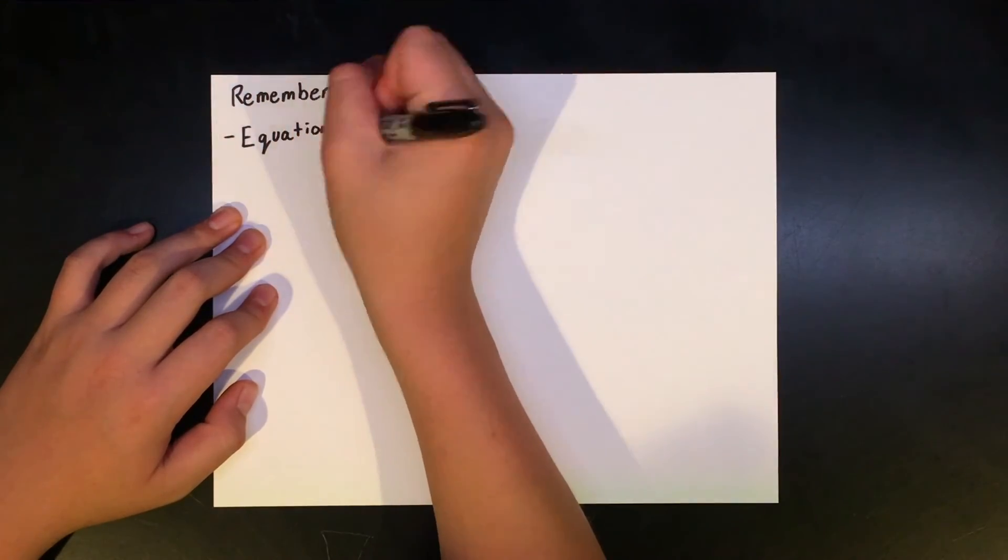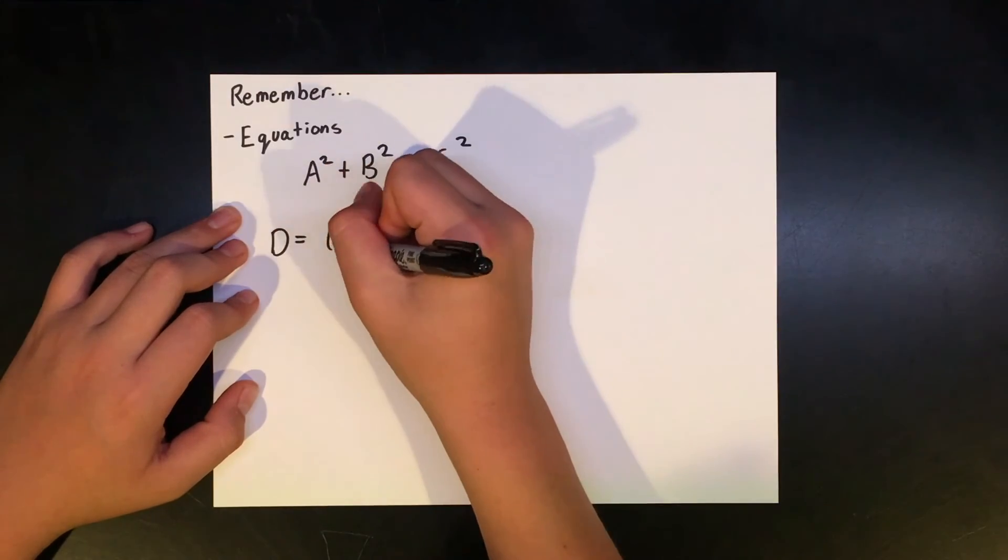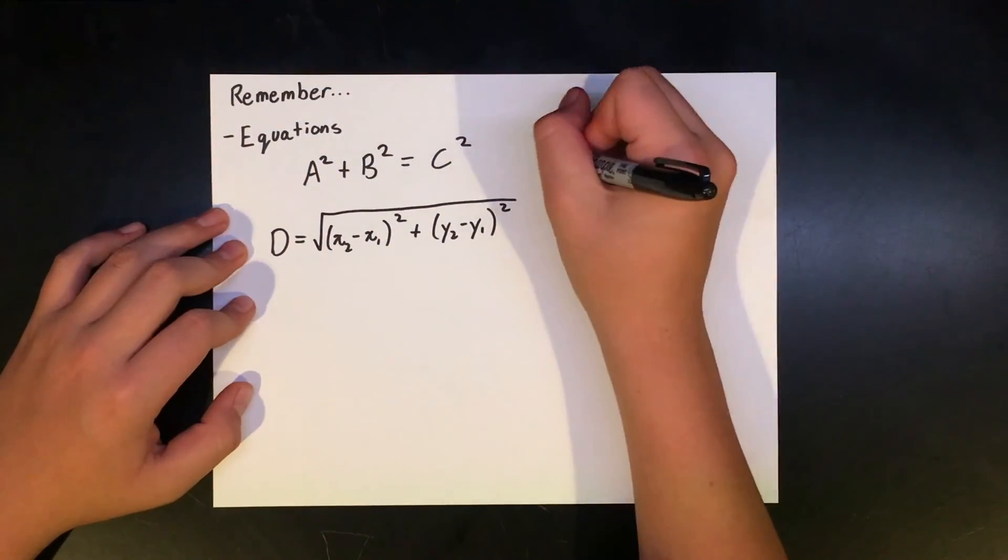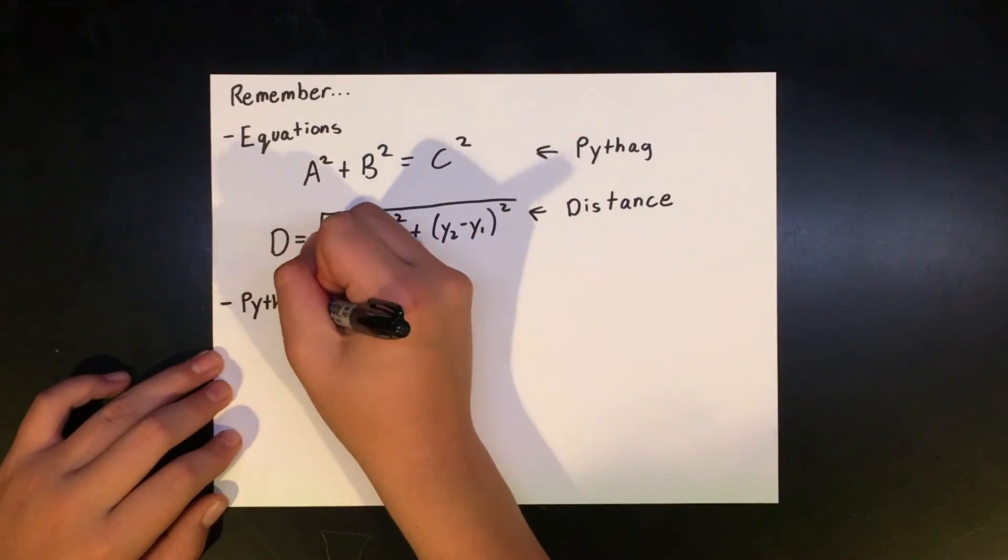Just remember that the equation for Pythag is a squared plus b squared equals c squared, in which a and b are the leg lengths and c is the hypotenuse, and distance formula is the square root of the difference in x squared plus the difference in y squared.